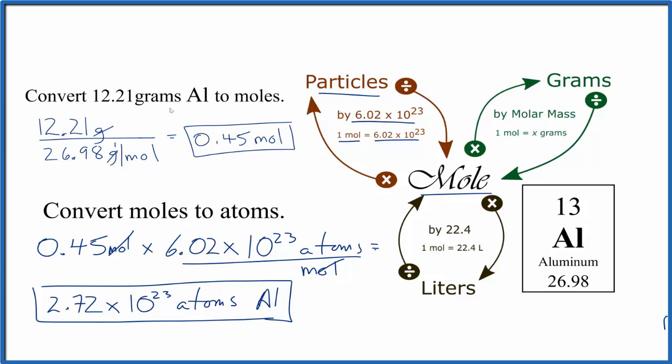So to recap, we converted grams of aluminum to moles, and then we multiplied those moles by Avogadro's number to get atoms of aluminum. This is Dr. B, and thanks for watching.